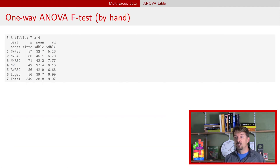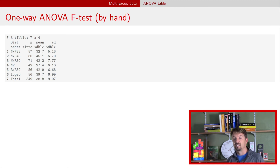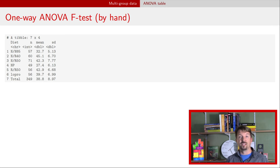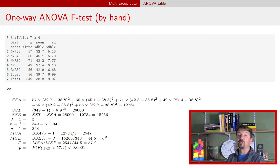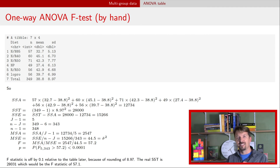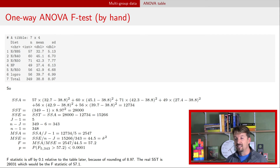Everything needed can be calculated from sufficient statistics: the number of observations per group, the mean within each group, and the standard deviation within each group. You can do this calculation by hand — I show results of doing that here — but generally we're not going to bother, since that's what software is for. There's a slight discrepancy between the hand-calculated values and the automatic ones due to some rounding, but that's not important.